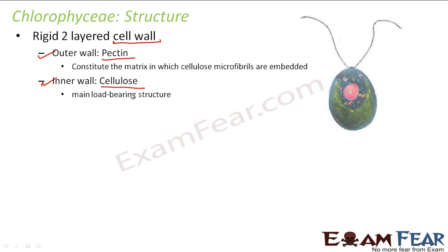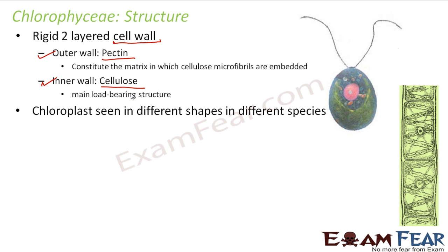Because cellulose can bear the load, it protects the material inside the wall. The additional outer layer made of pectin acts as a matrix — a gel-like material in which the cellulose microfibrils are embedded. Pectin provides a little flexibility to the cell wall and gives support to the cellulose. Together, cellulose and pectin make the cell wall both strong and flexible.